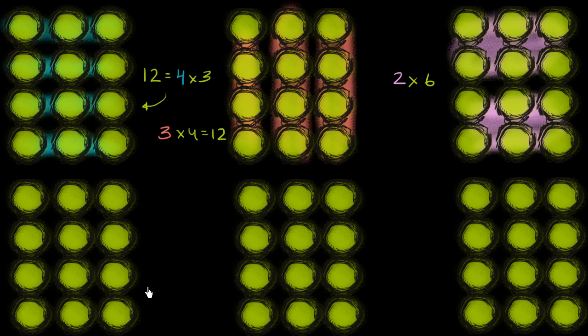Well, what about viewing it as 6 groups of 2? Well, we can draw that out too. 6 groups of 2. So that's 1 group of 2. Let me do that in a different color. We have this purple color. We have 1 group of 2, 2 groups of 2, 3 groups of 2, 4 groups of 2, 5 groups of 2, and 6 groups of 2.